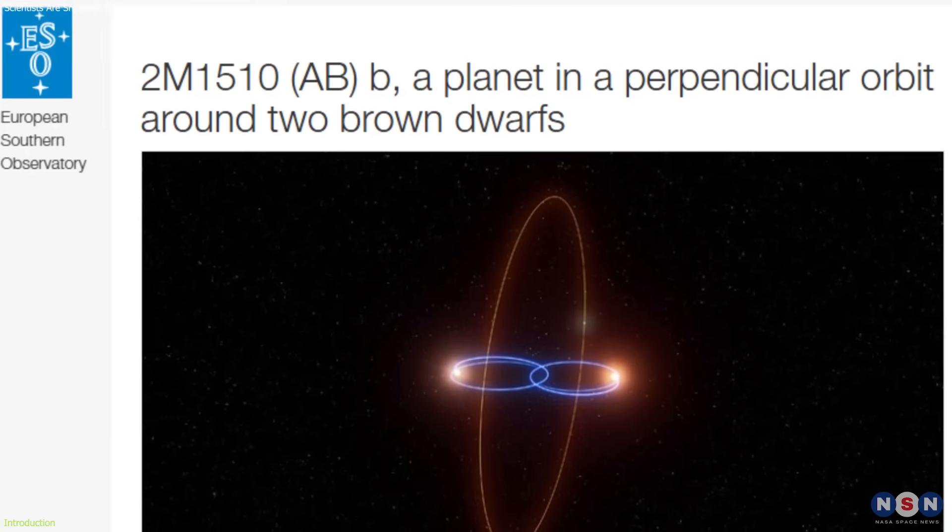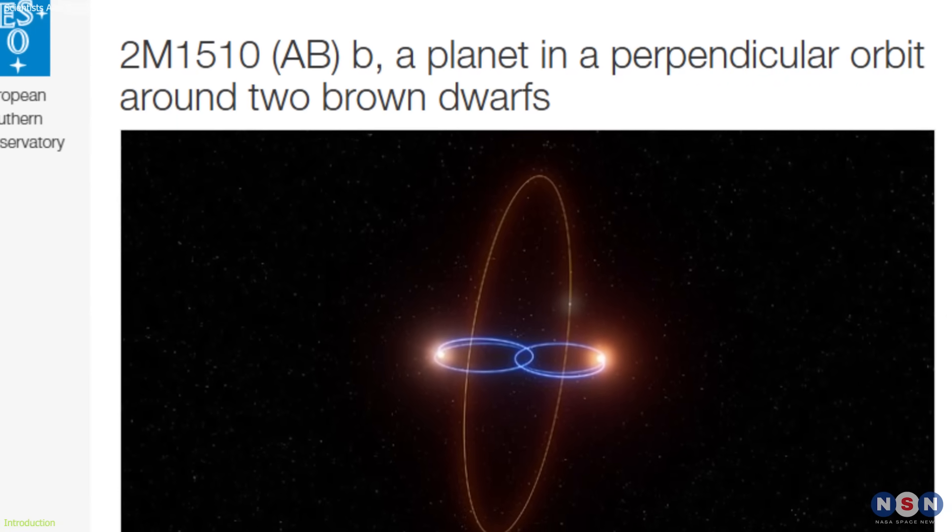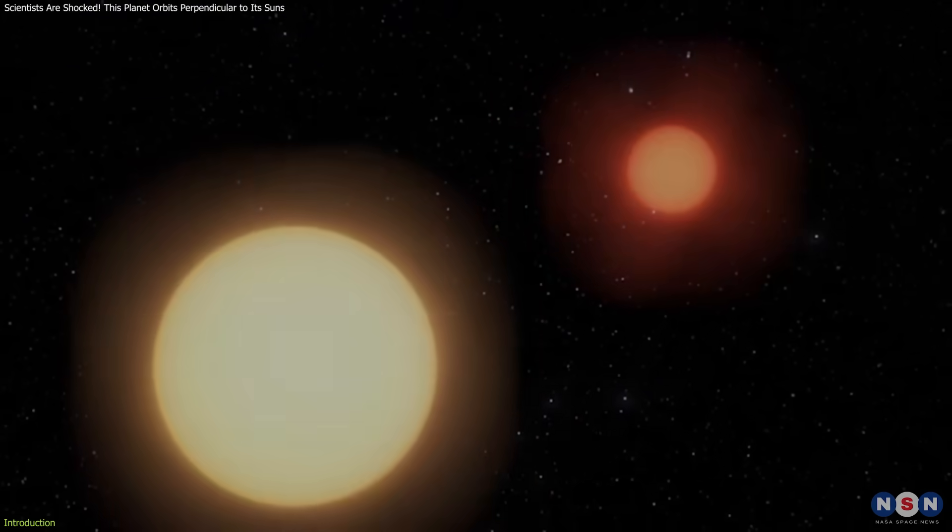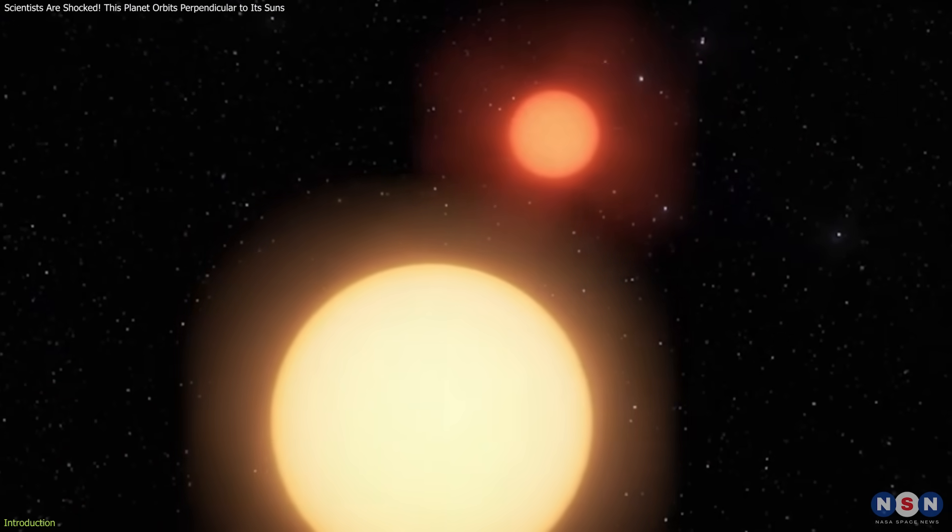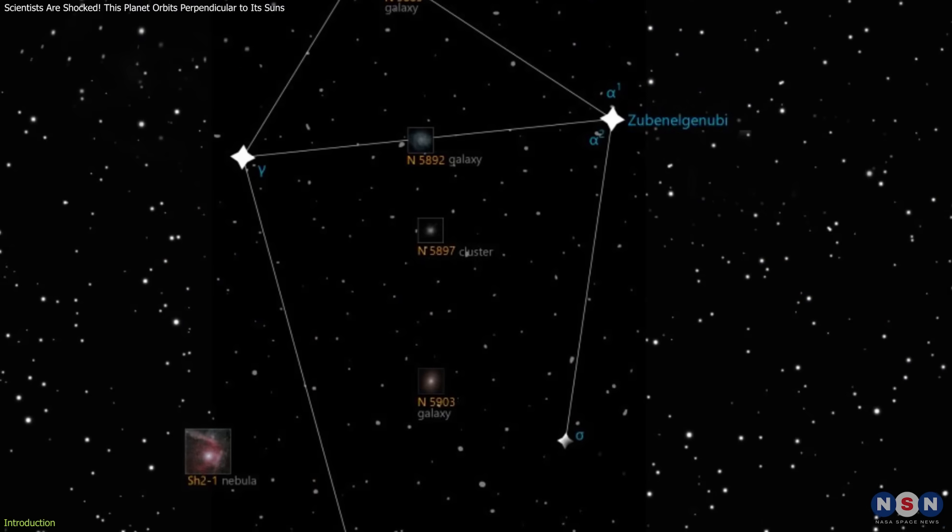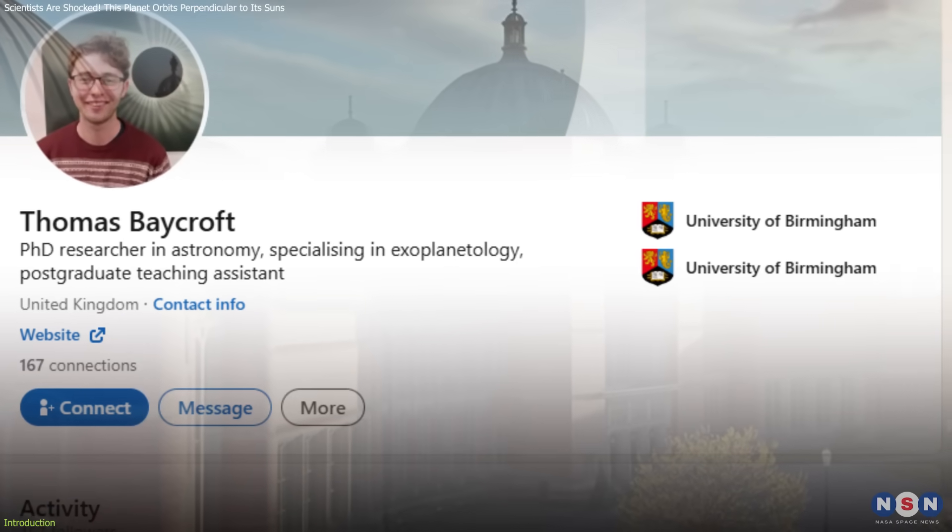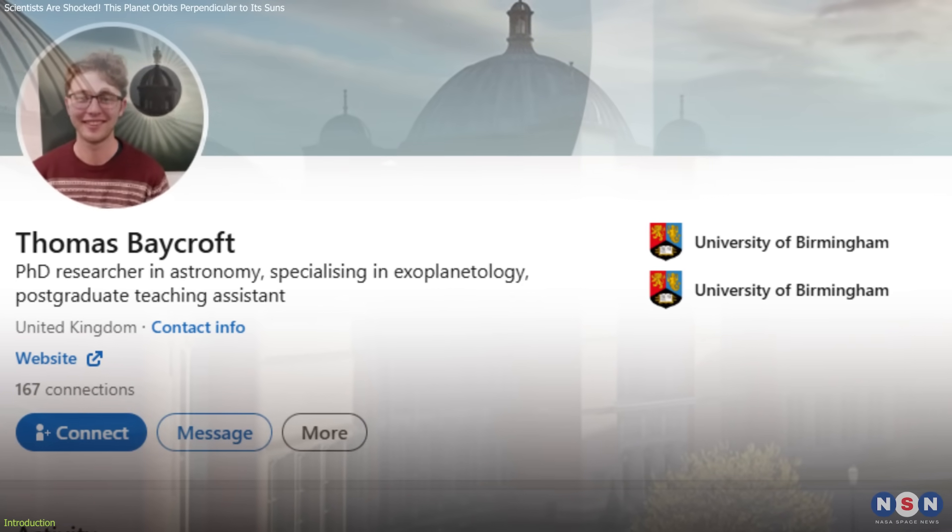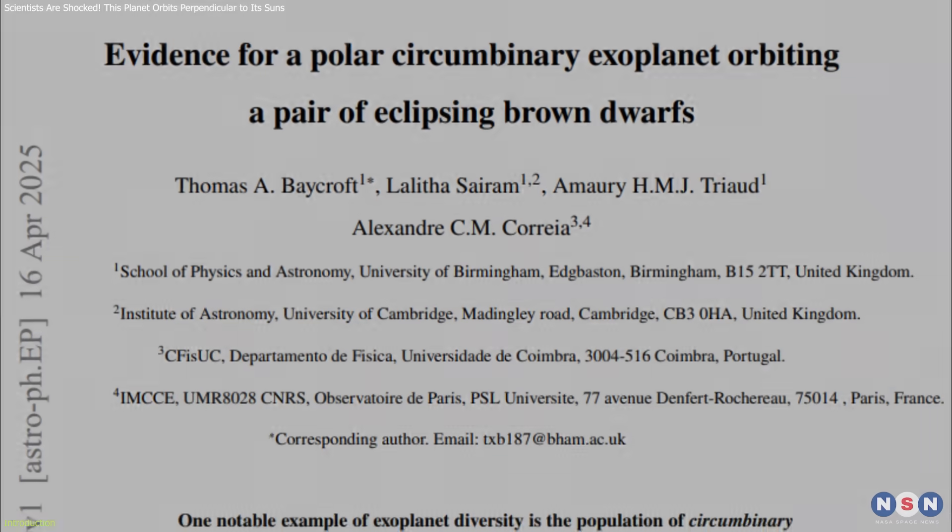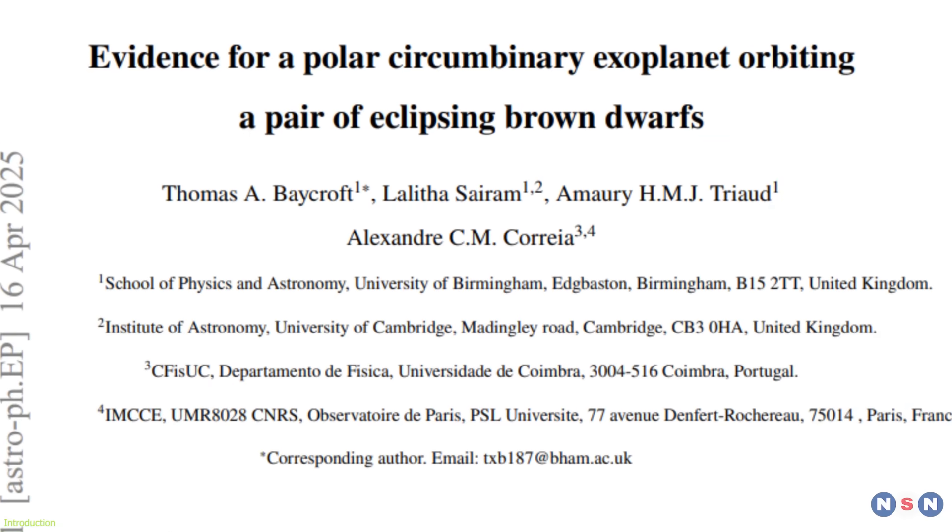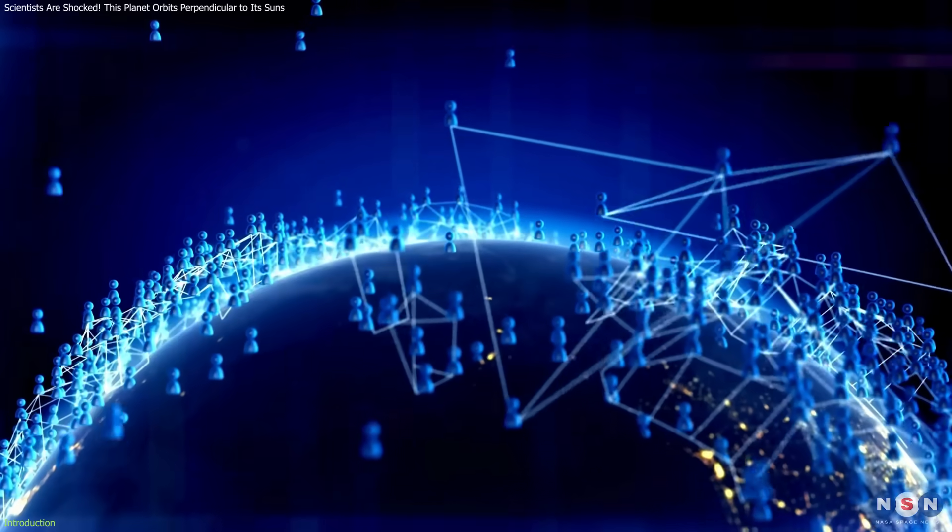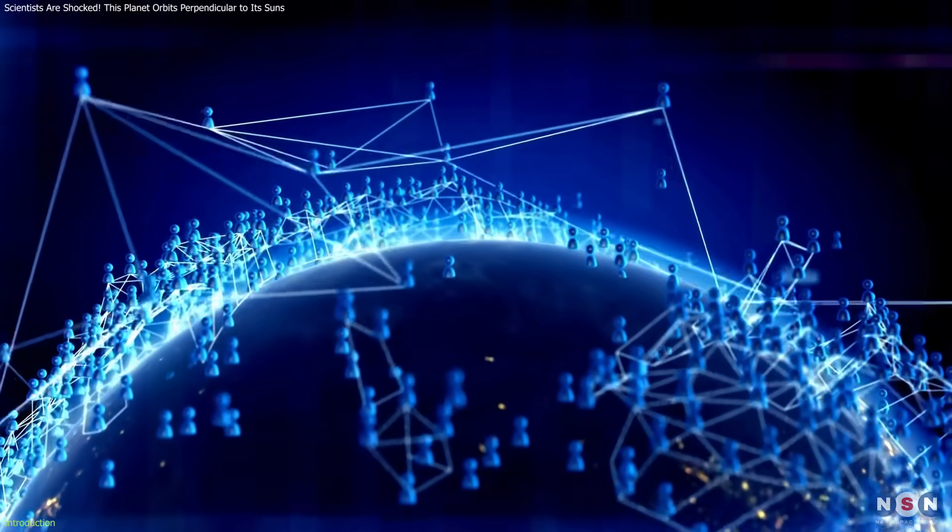Known as 2M1510ABB, this planet was found in a binary system made of brown dwarfs, hidden away in the constellation Libra. The discovery, led by Thomas Baycroft and his team from the University of Birmingham, wasn't even planned. It was a serendipitous find that has now captivated the astronomical community worldwide.